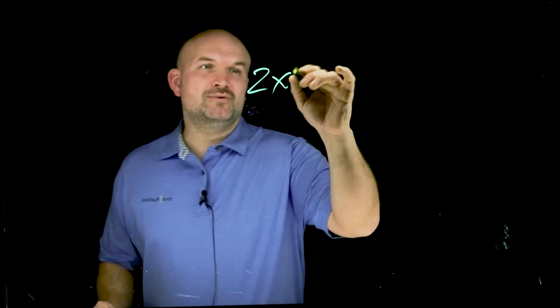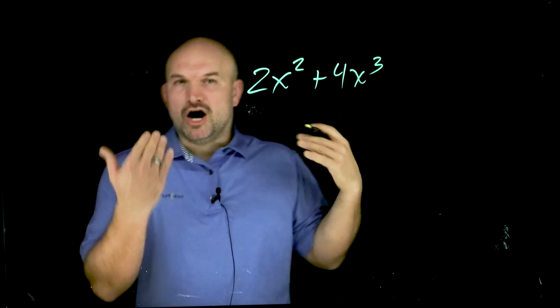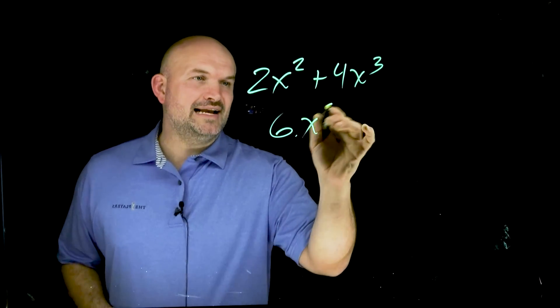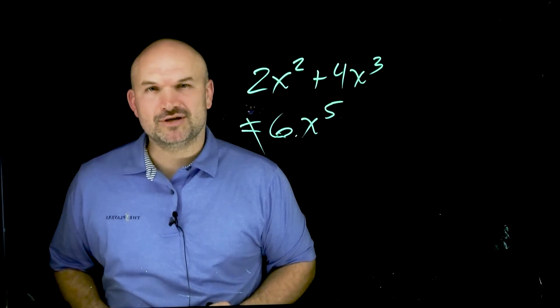What about if I have 2x squared plus 4x cubed? All we simply need to do in this case is add the 2 plus 4 to give us 6 and x to the 5th. Just kidding, guys. That's not a property. Don't do it.